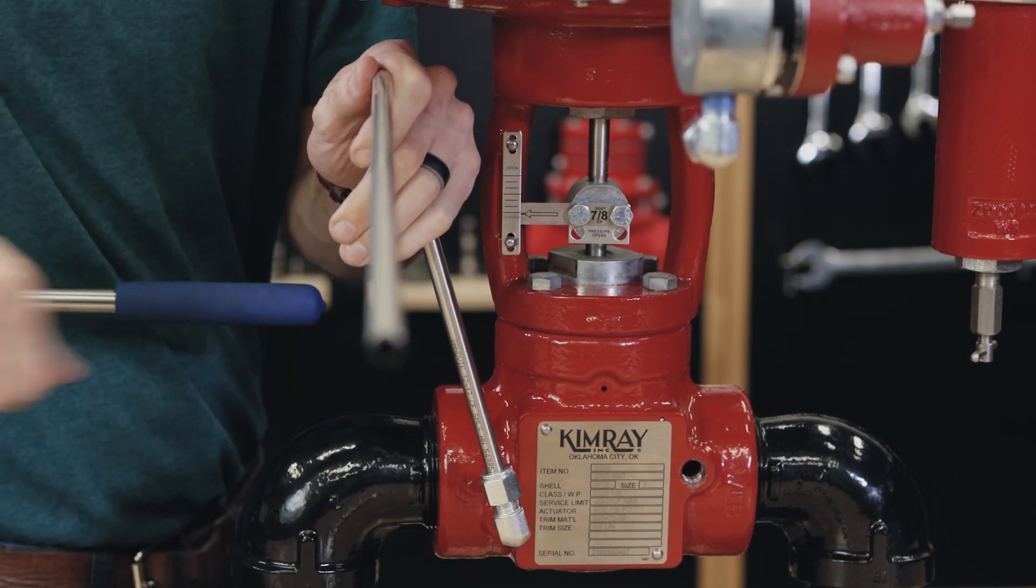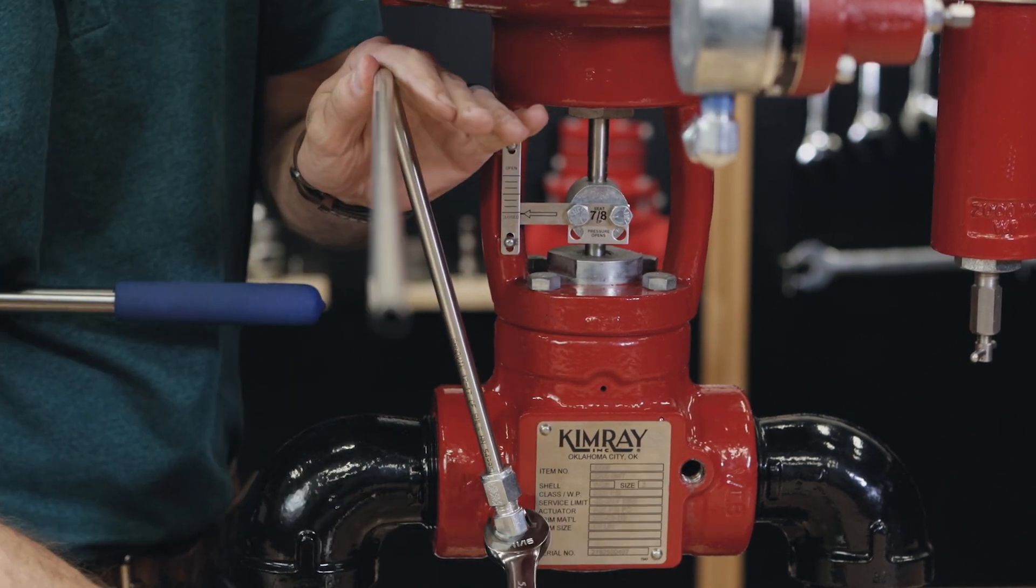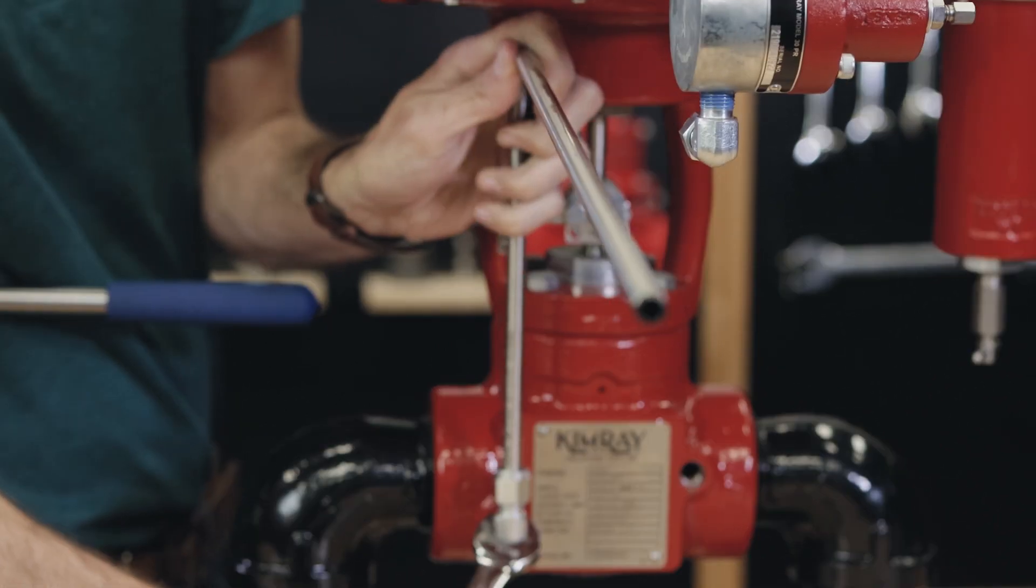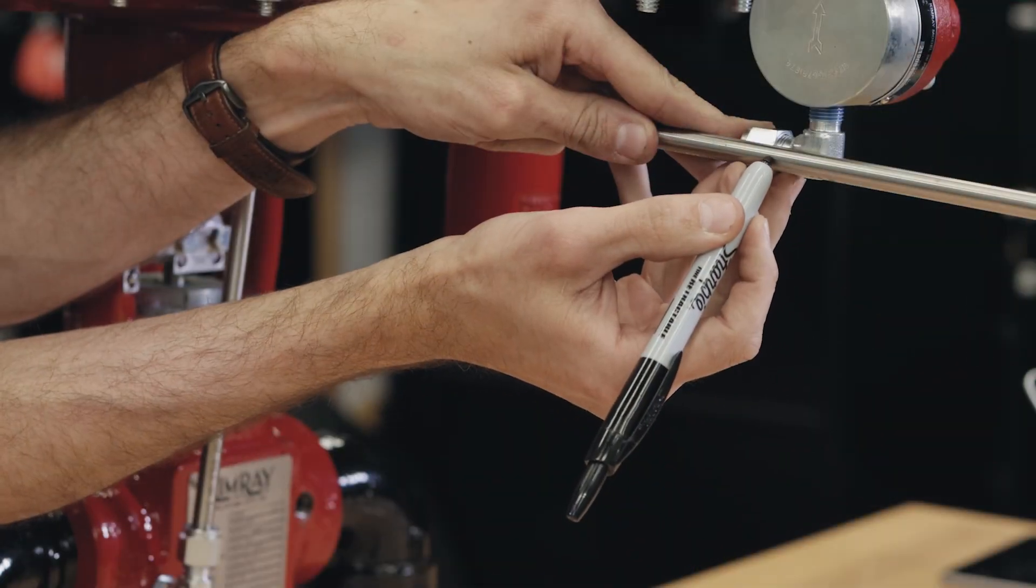Now we'll be cutting our bent tube to length. Insert the tubing in one fitting and make a mark where it aligns with the shoulder of the fitting body.